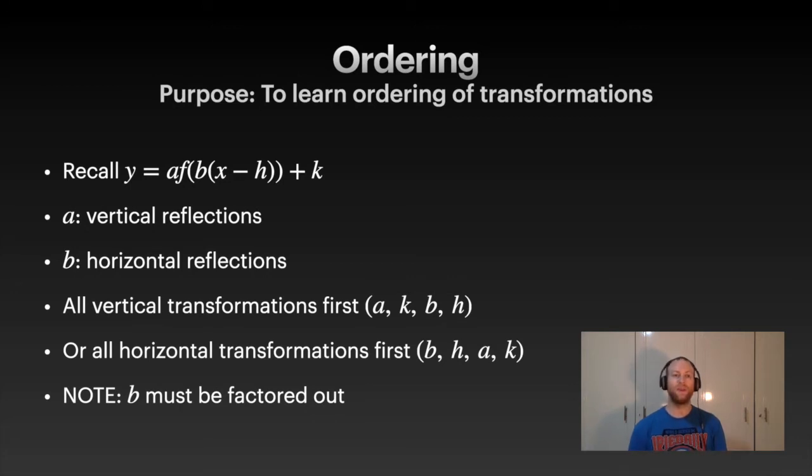Note, in order to do this—and this is a big note because this is going to mess up some people—you need to factor out the b. In the expression up top, notice it's f(b(x − h)), so if there's a number that's right beside the x inside that inner brackets, you need to factor it out. Otherwise this method won't work. If you always factor this out, you just have to memorize this. I think this is easier, just do it this way.